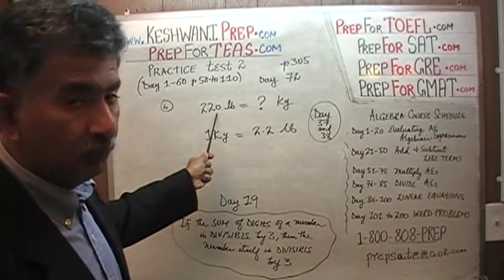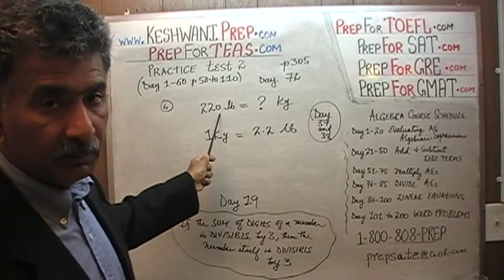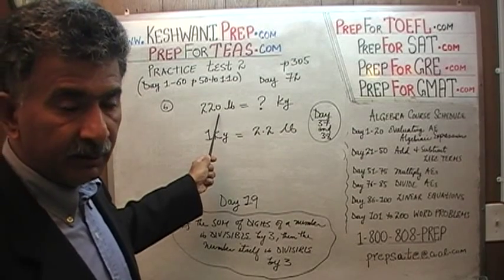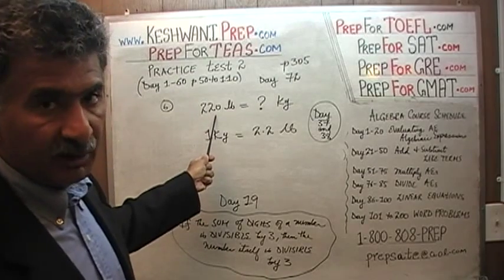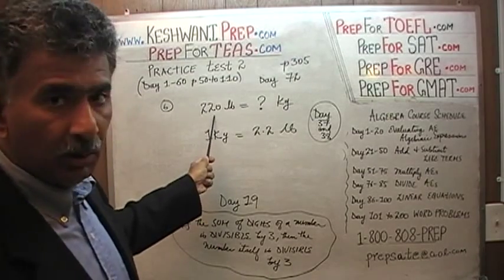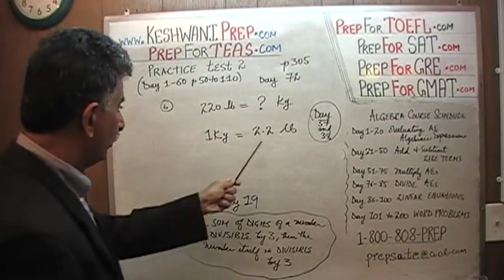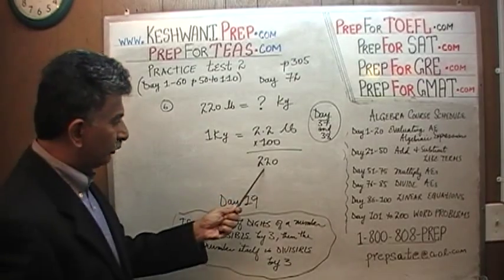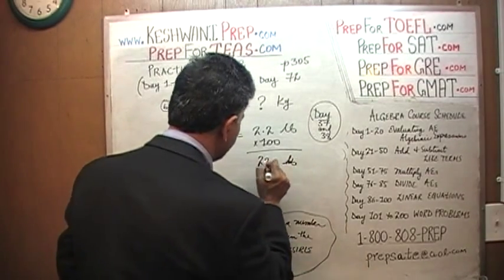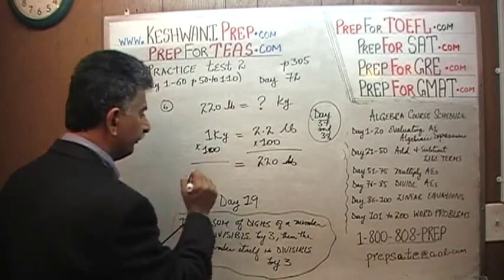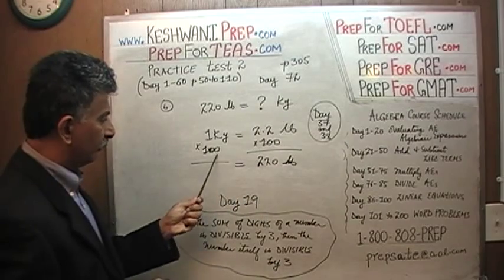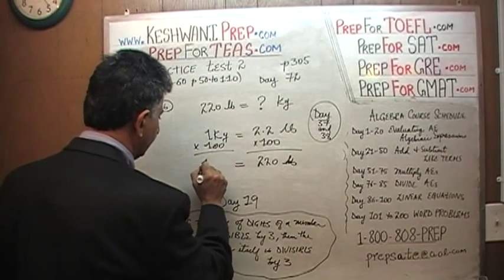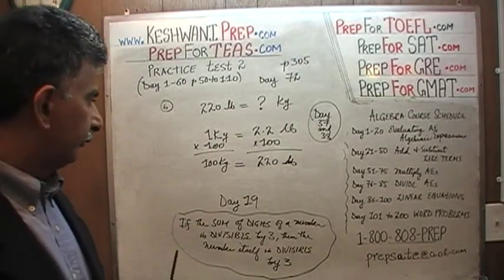Here we do not have 2.2 pounds — we have 220 pounds. That 220 is there for a reason. These numbers are not picked at random; they are there by design. Why was this not 230 or 245? We should immediately see that 220 is the exact multiple of 2.2 — it's 2.2 times 100. Which means 220 pounds equals 100 kilograms. That's all.